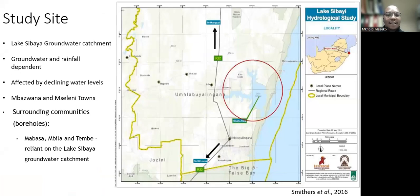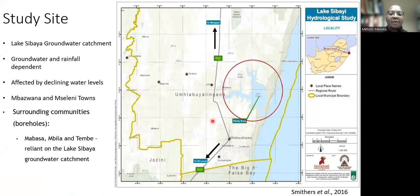The study site is the Lake Sibaya groundwater catchment, which is located in the uMhlabuyalingana local municipality. The Lake Sibaya groundwater catchment is groundwater and rainfall dependent, which means that we have no rivers flowing into the groundwater catchment of Lake Sibaya. So lake water levels, as well as groundwater levels and other surface water bodies, are a reflection of the rainfall occurring over the area as well as the groundwater store in the area.